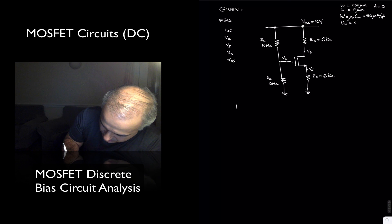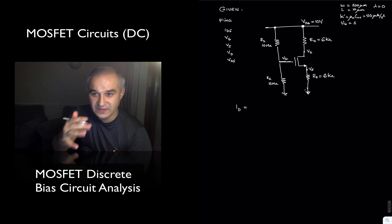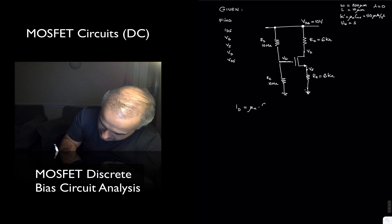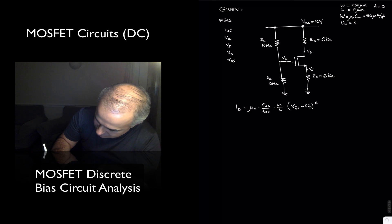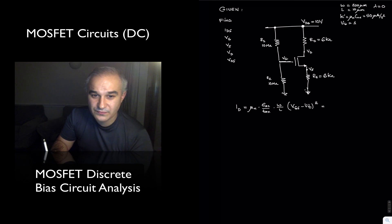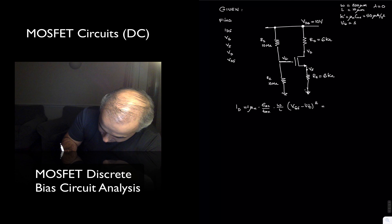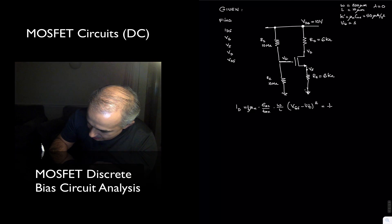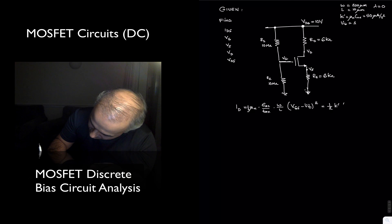In that case, Id is equal to, we already derived this, μn permittivity of the oxide divided by thickness of the oxide, width over length, Vgs minus Vt squared, or one half k' W/L (Vgs - Vt)².